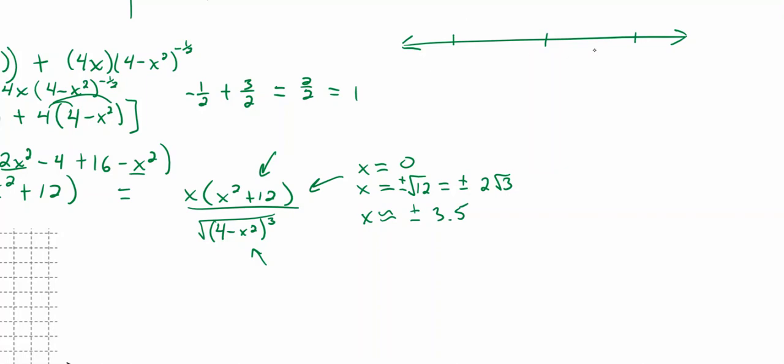So then let's put down our numbers on our line here for intervals. So this would be negative 3.5, about 0, and 3.5.